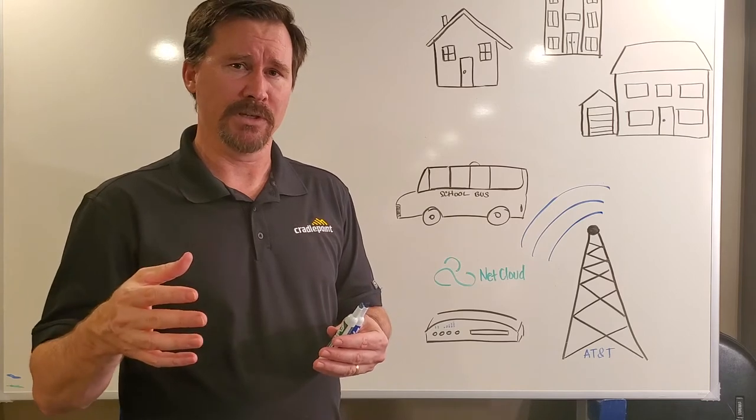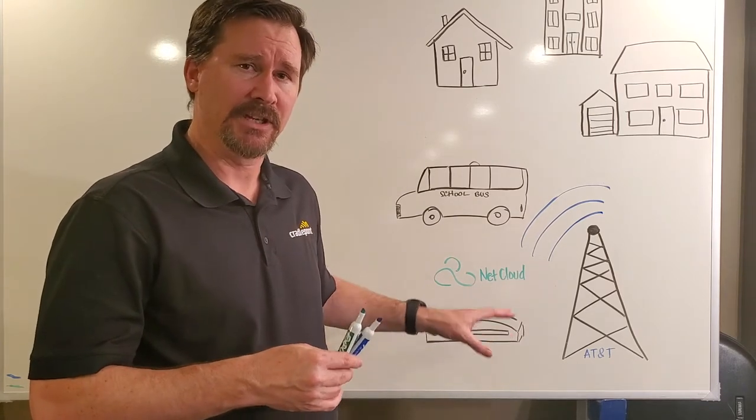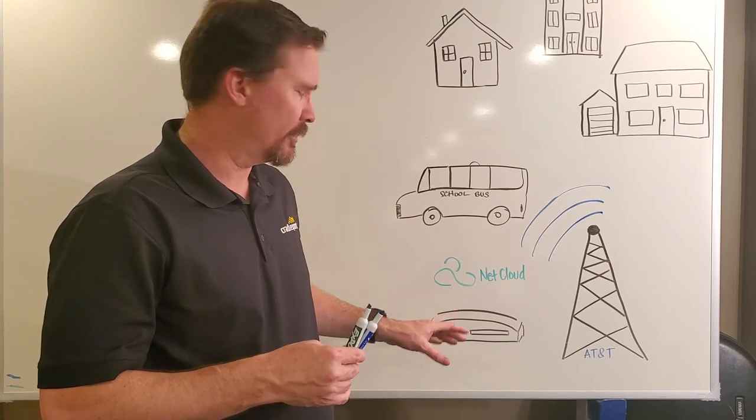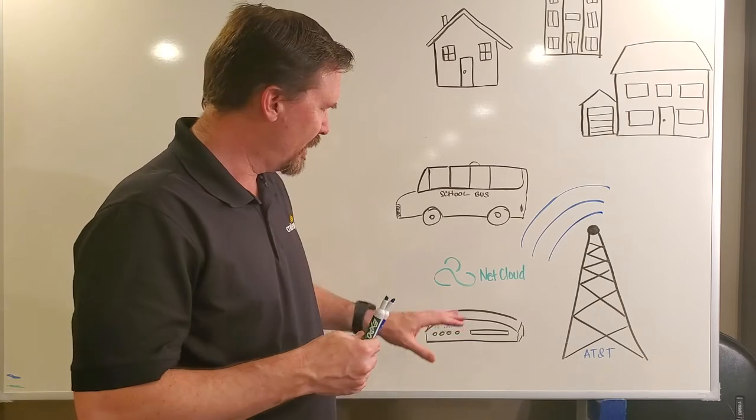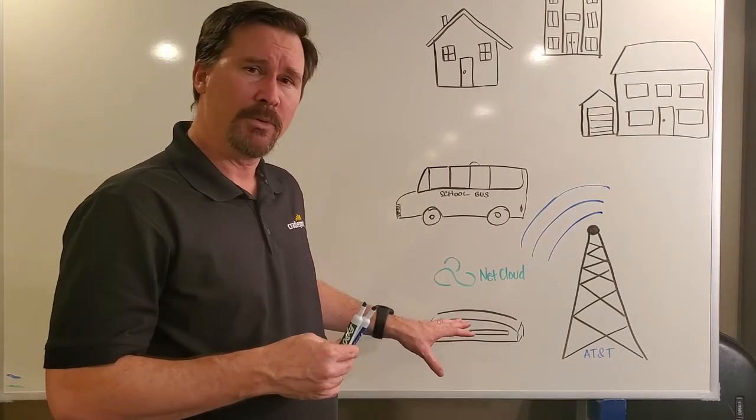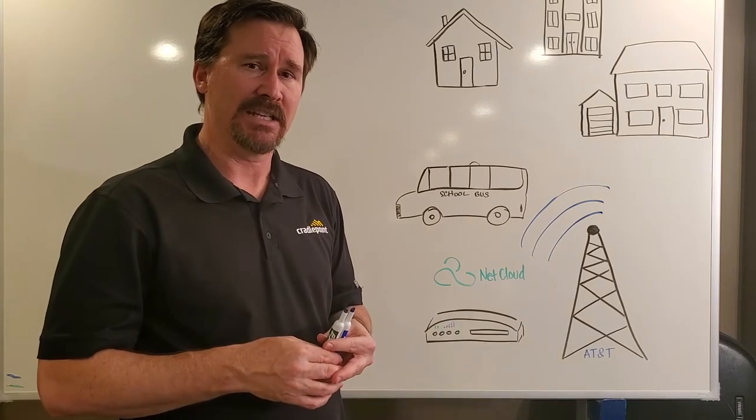There's also the hardware endpoint. With a device like the IBR 1700, you have a best-in-class ruggedized mobile router that's designed to be used in vehicles like school buses. The IBR 1700 can be set up with a CAT-18 modem that is compatible with AT&T's 5GE network.